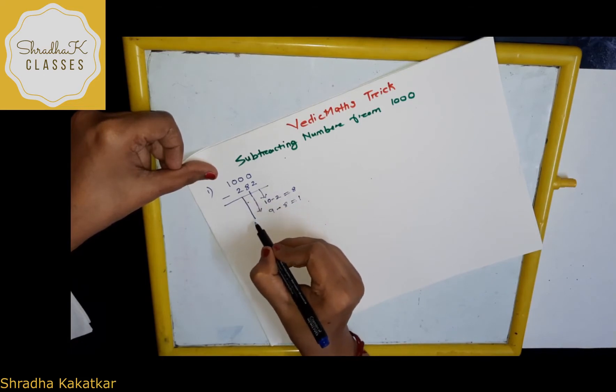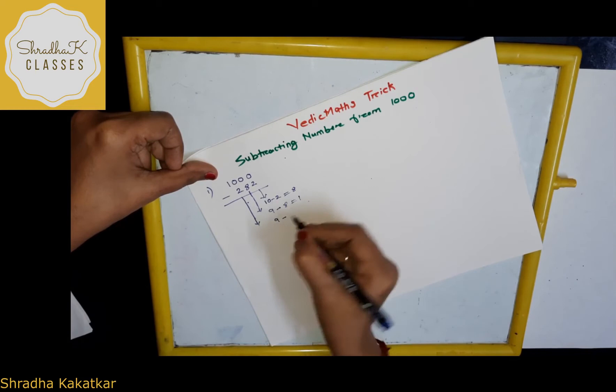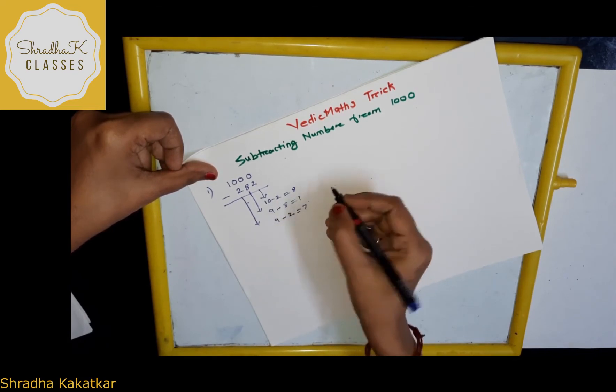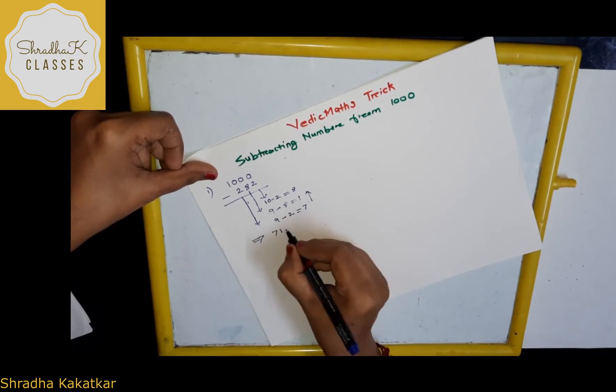Next, again, what I am doing here is, again I am taking 9, 9 minus 2, 7. So, this is my answer. What is it? 7, 1, 8, understood?